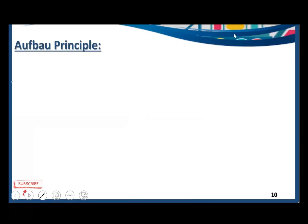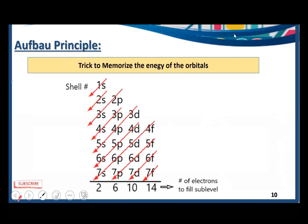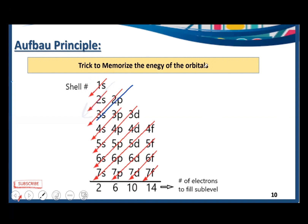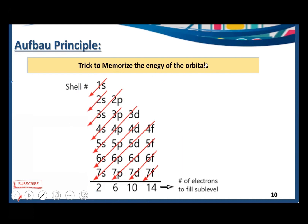There is a trick to memorize the energy levels without calculating n plus l each time. We fill in this diagonal pattern: 1s, then 2s, then 2p and 3s, then 3p and 4s, then 3d, 4p, 5s, 4d, 5p, 6s, and so on. Starting from the top and going diagonally down gives the correct filling order for all orbitals.